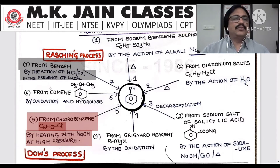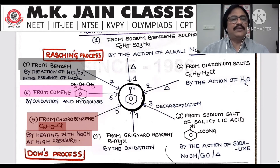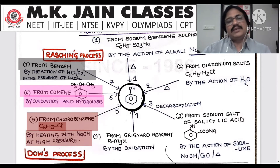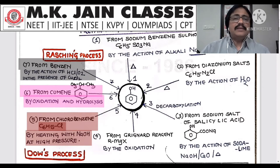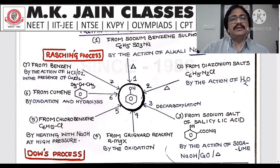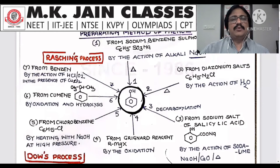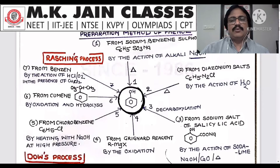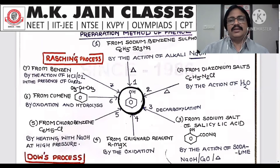Seventh: from cumene — the formula of cumene is a benzene ring with an isopropyl group (C6H5CH(CH3)2). By oxidation and hydrolysis, you will get phenol. All these methods I am telling you — keep in mind — read them in the power map and you must learn them.